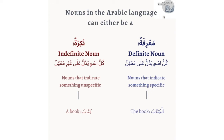Nouns in the Arabic language can either be a ma'rifah, which is a definite noun — it indicates something specific. And there's also a nakara, which is an indefinite noun — a noun that indicates something unspecific.